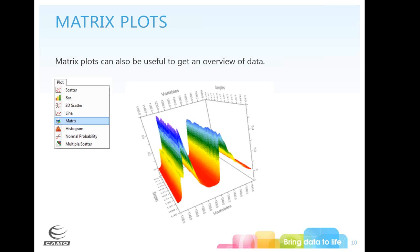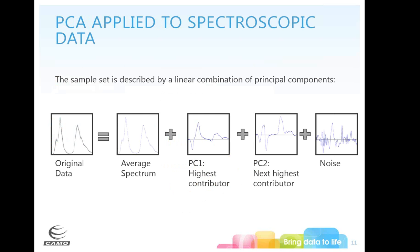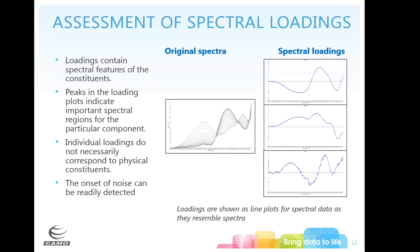Let's quickly talk about principal component analysis — our exploratory analysis. You take your original data and break it down into the most variation. First you mean-center your data, taking out the average spectrum. The first principal component captures the wavelength ranges that are the highest contributors to variation in your data, and subsequent components capture the next-largest contributors. These loadings contain your spectral features and should look something like your original spectra so you can interpret them. When they start looking very noisy, it's probably noise and you should stop.